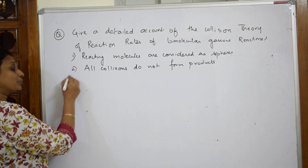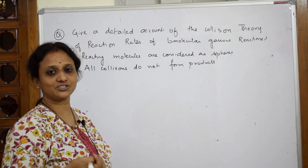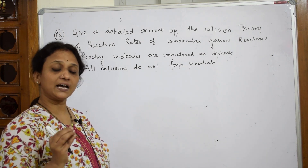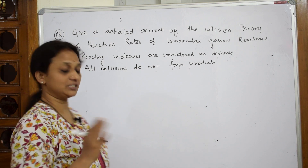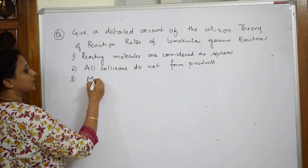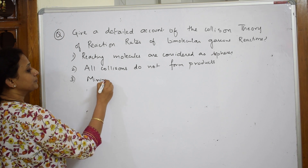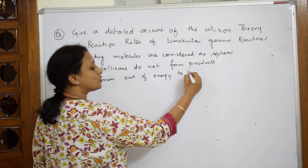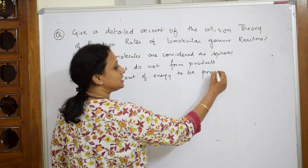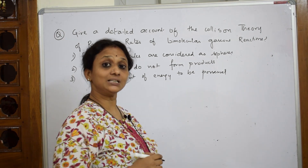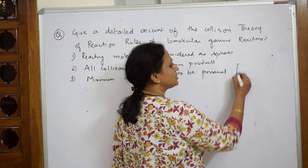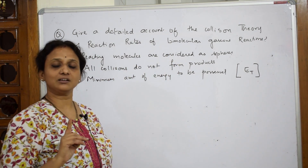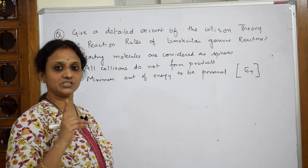To form products, the molecules should have a minimum amount of energy. That particular sphere should possess a minimum amount of energy. This minimum amount of energy is called threshold energy. They should have a minimum amount of energy called threshold energy, and then only they will collide or react to cross the energy barrier.